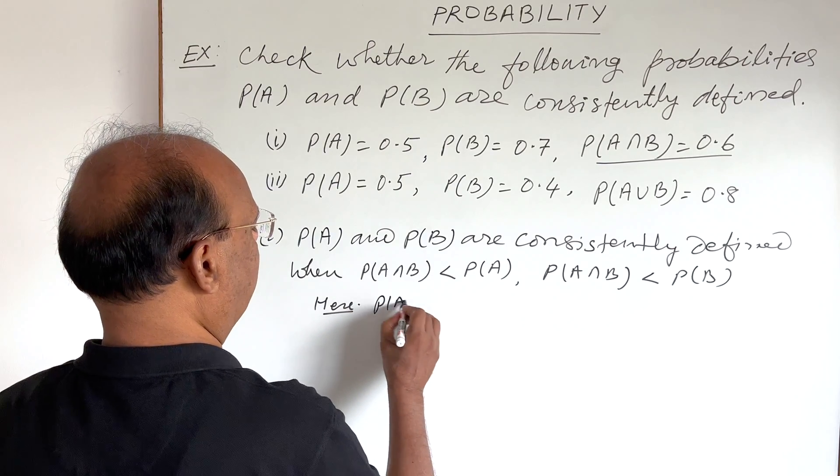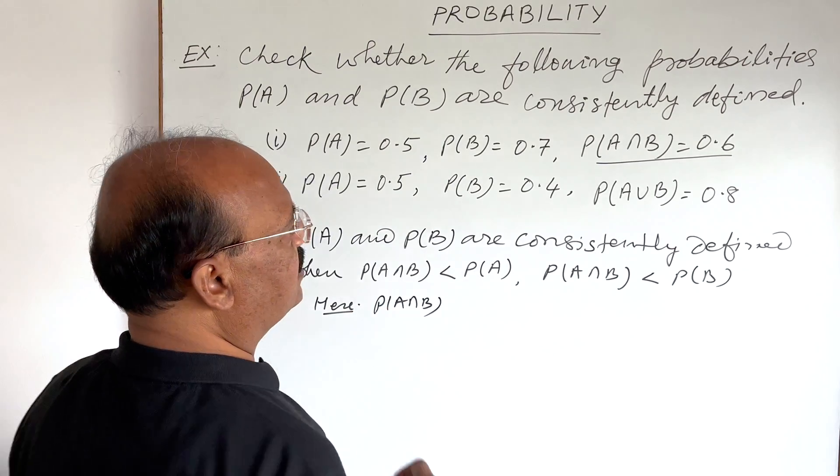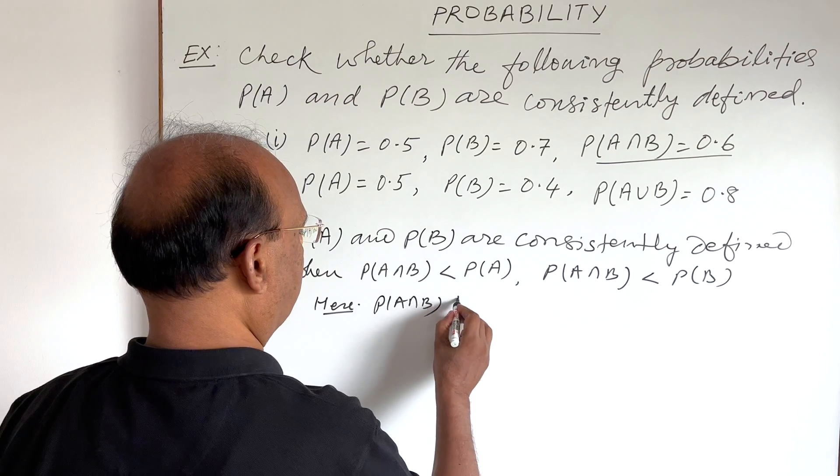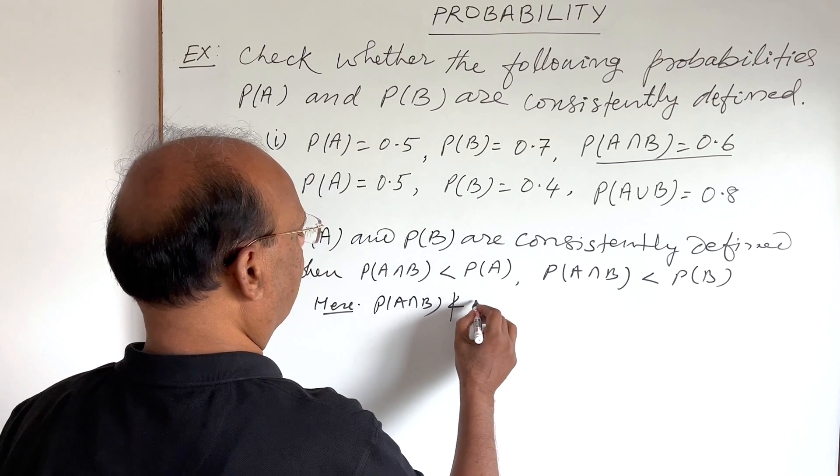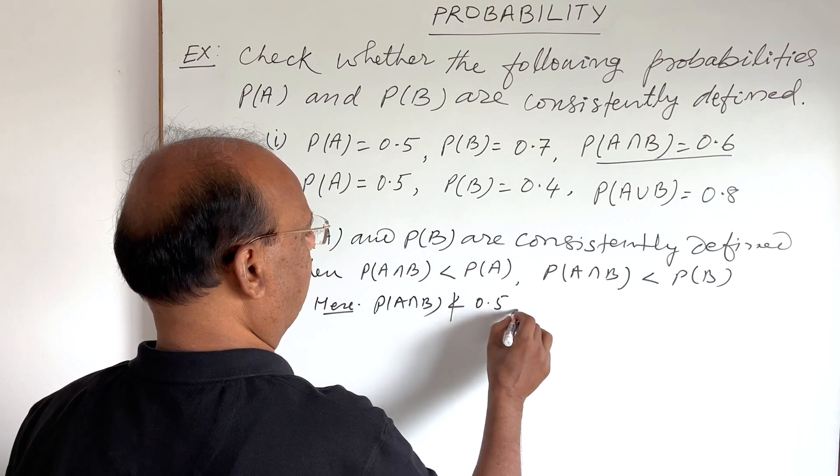Here, P(A intersection B), this is 0.6. So, this is not less than 0.5.